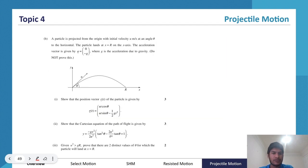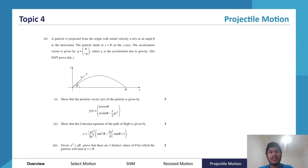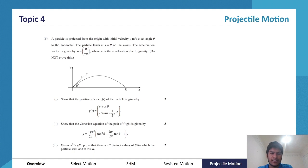Here is a question from the 2020 HSC. If you have a careful look at this question, you'll see that pretty much it's purely built on extension 1 content. Deriving the equations in part 1 is a stock standard extension 1 question. Part 2 is deriving the Cartesian equation, which again is something you'd have seen in extension 1. And part 3 is just an inequality question — not too hard.